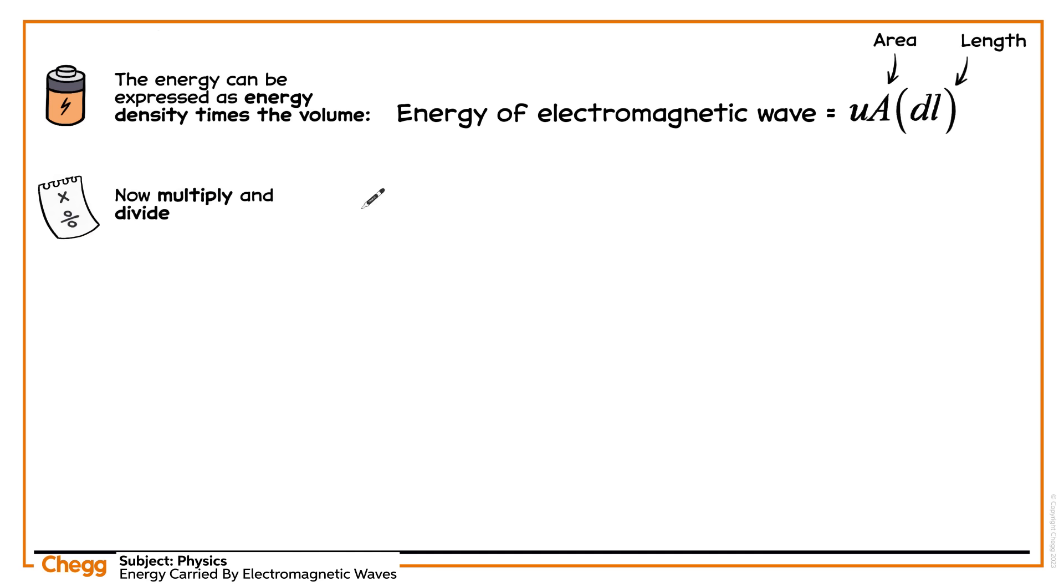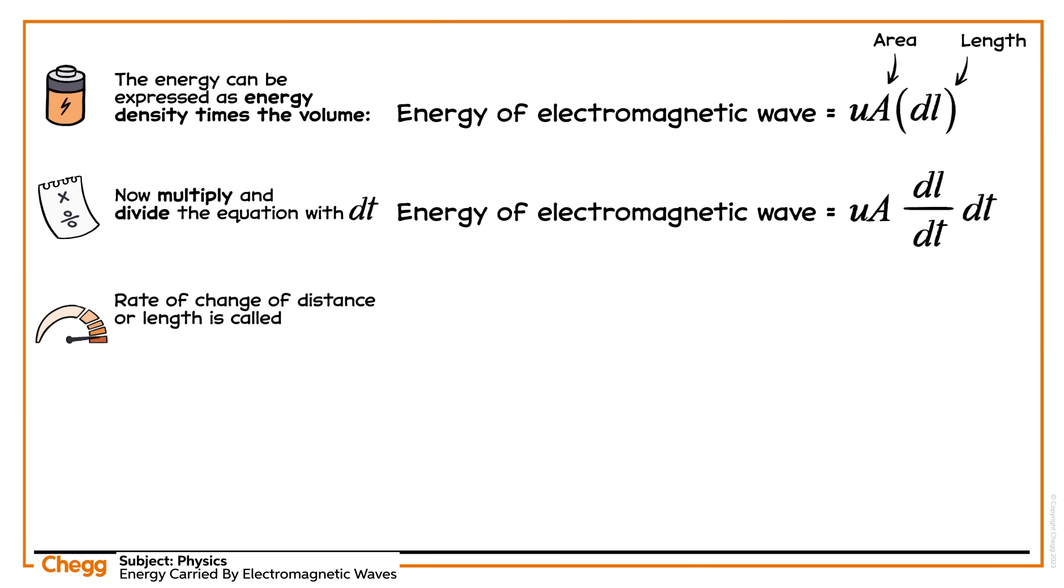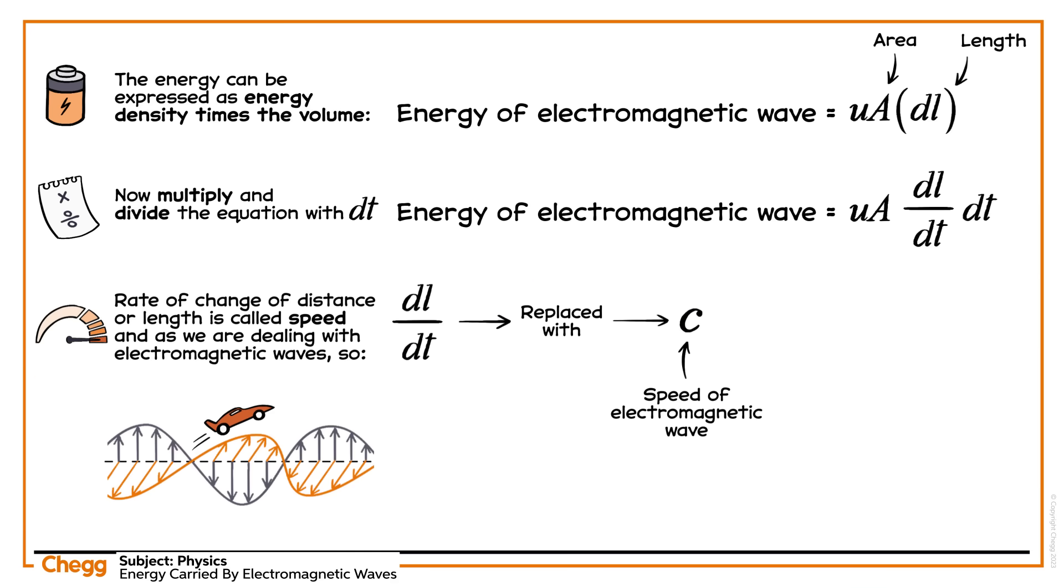Now multiply by DT over DT. Rate of change of distance or length is called speed, and as we are dealing with electromagnetic waves, DL over DT must be replaced with the speed of electromagnetic wave C. Therefore, we are left with this.